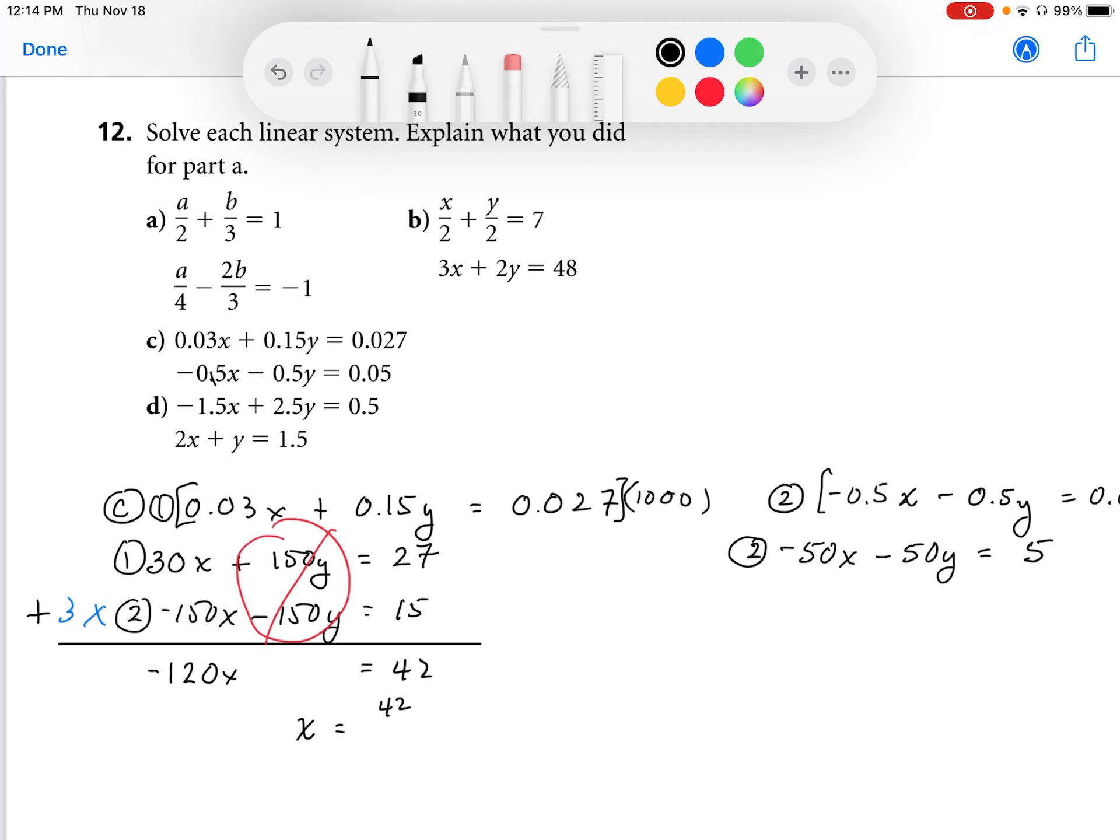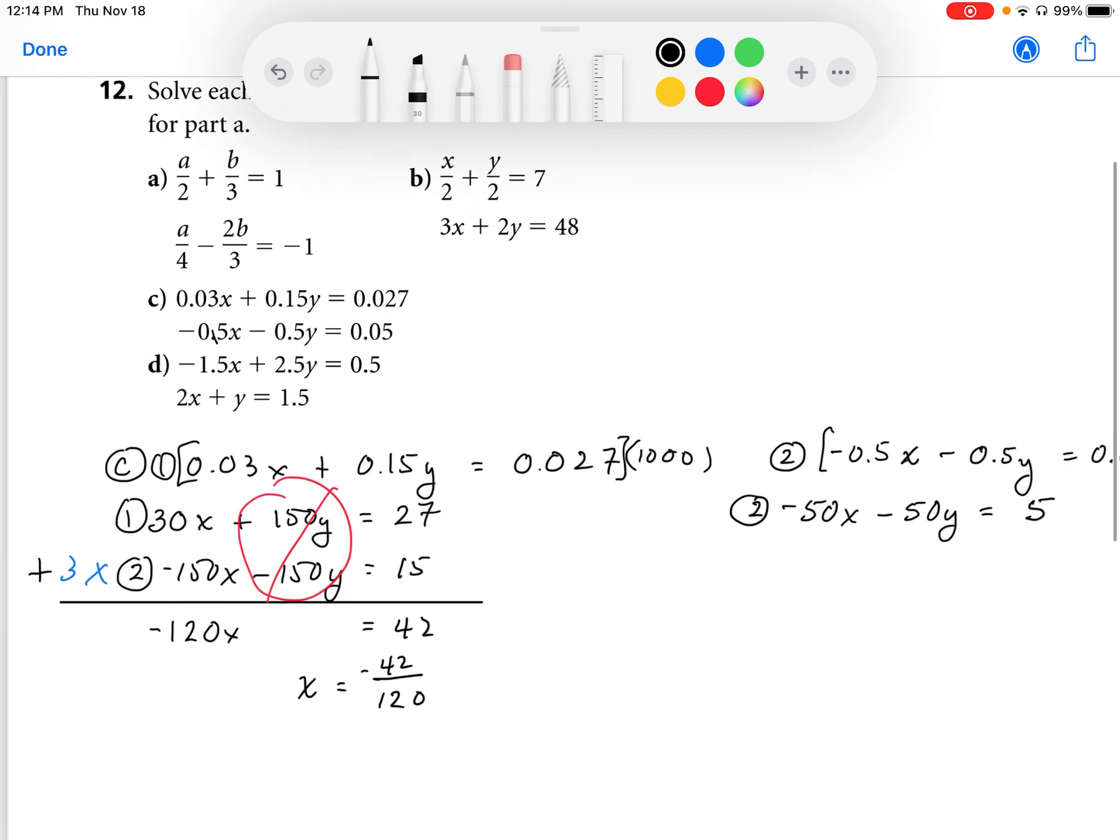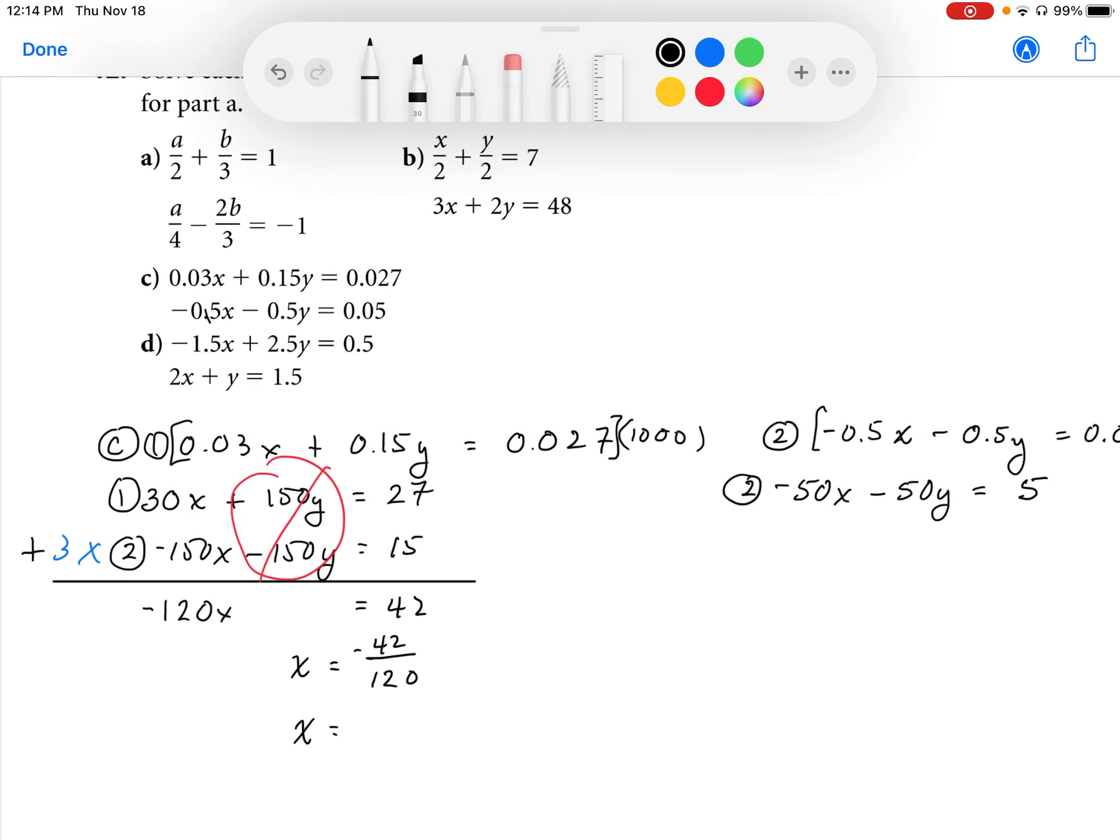Solving for x, I get 42 over negative 120. This does have common factors, so I'm going to simplify this into negative 7 over 20. And as a decimal, that's going to be negative 0.35. So I'm going to box in x here.